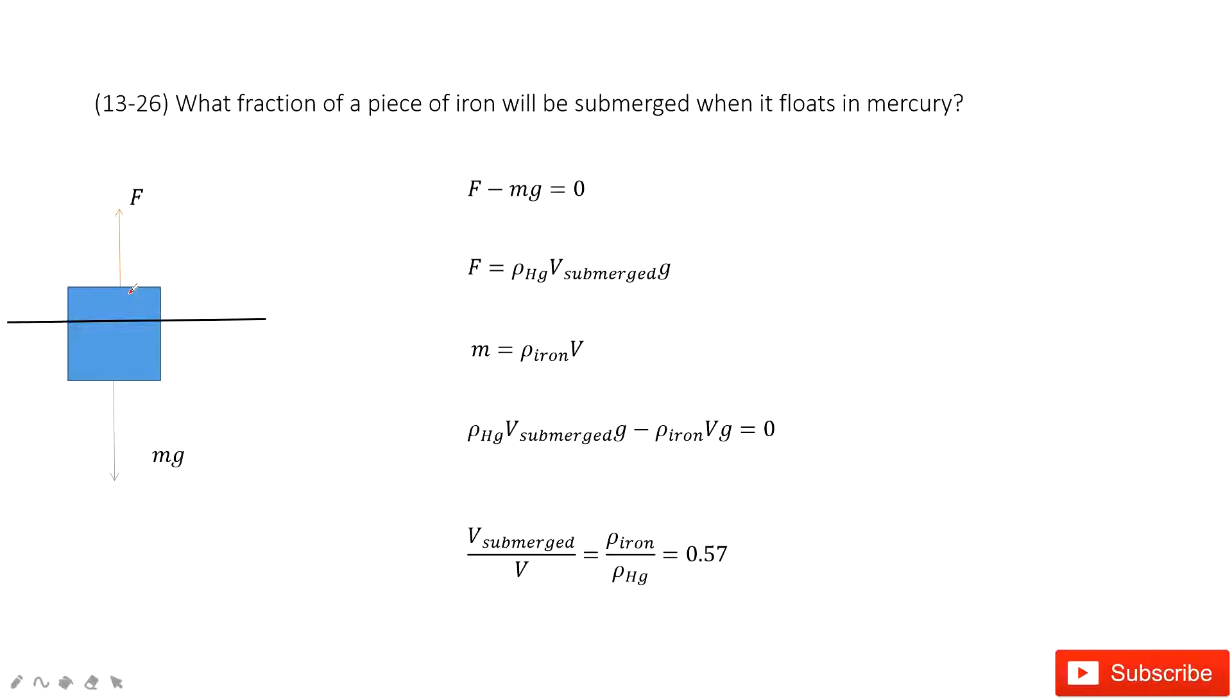In this case, if the iron object is stationary, floating along the surface of the mercury, the forces must be balanced. The buoyant force must equal gravity.